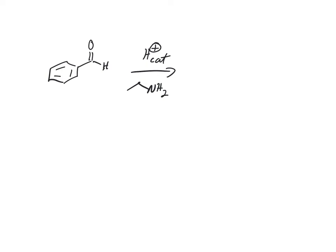We have an aldehyde and we have a primary amine. So aldehyde, primary amine, H+ is a catalyst. We should know right away, without doing the mechanism, what the product's going to be. It's going to be an imine.